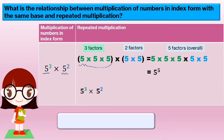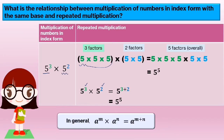From here we can make the conclusion: 5 power of 3 times 5 power of 2 equals 5 power of 3 plus 2, so 3 factors plus 2 factors equals 5 power of 5. In general, a power of m multiplied by a power of n equals a power of m plus n.